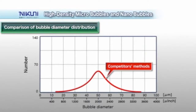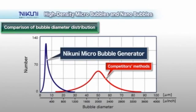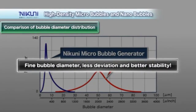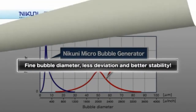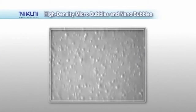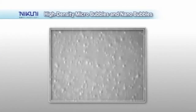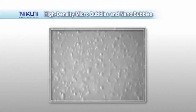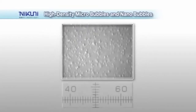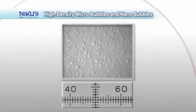Nikuni micro nano bubbles have a mean diameter of approximately 5 microns with little deviation. The tiny micro nano bubbles adhere to fine suspended matter in the water and bring them to the surface, allowing for improved cleaning performance.